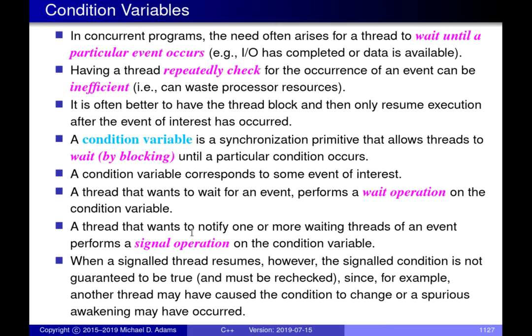A condition variable provides a wait operation where you can wait for the condition associated with it to become true — more specifically, you wait for the condition variable to be signaled, someone indicating that the associated condition is now true. The other operation is a signaling operation, essentially the way we say a particular condition is now true.